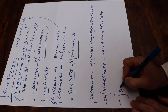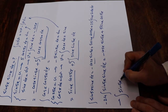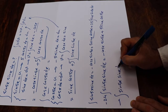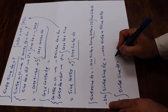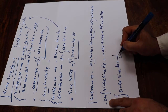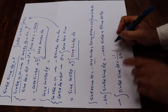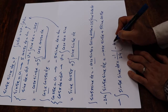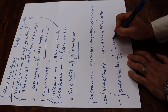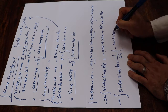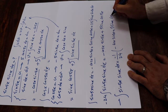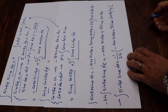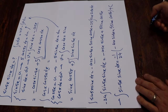Therefore, the integral of sin 5x sin x dx will be equal to — basically minus 1 divided by 24 — times the quantity: minus cosine x sin 5x plus 5 sin x cos 5x, plus C, which is the constant of integration.